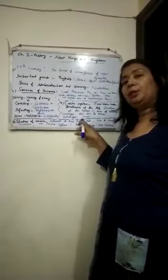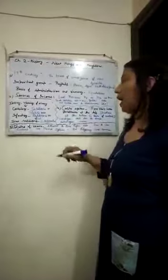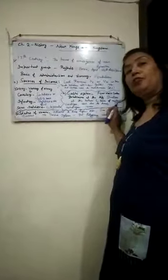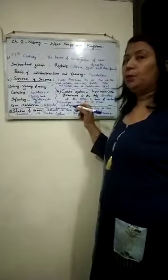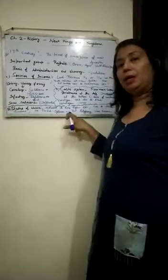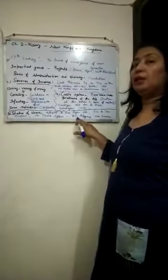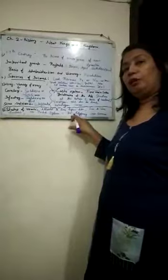Shudras were at the bottom because the work done by them was considered low, like sweeping. Regarding the status of women — they were allowed higher education and were free to choose their husbands in the swamber, as seen in the Ramayana with Sita. However, one social evil prevailing in society was polygamy — more than one wife was allowed for men — and this was the main social evil at that time.